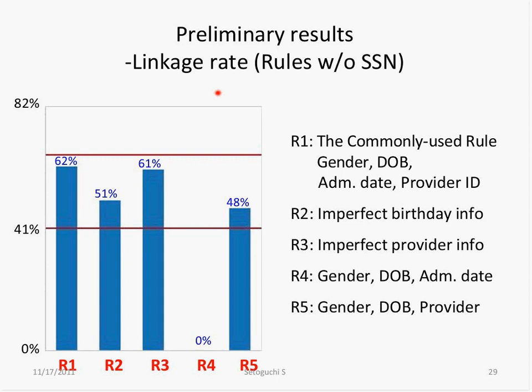Rules with social security showed similar linkage rates. Rule six — using social security, gender, date of birth, admission date, and provider ID — had a very similar linkage rate to rule one without social security. With fewer linkage variables (rules seven and eight), linkage rate increased, but rule nine showed lower rates due to one-to-many matches. All rules with provider ID perform similarly; without provider ID, you get too many one-to-many links and cannot determine validity.